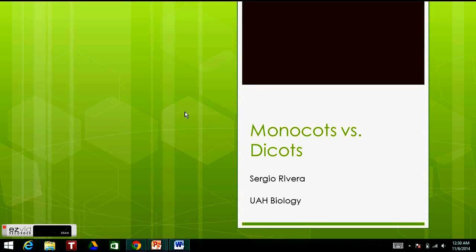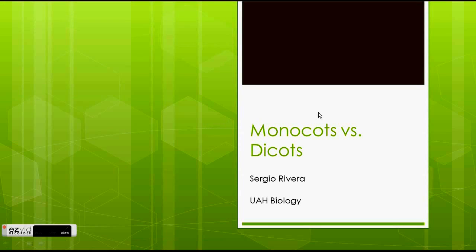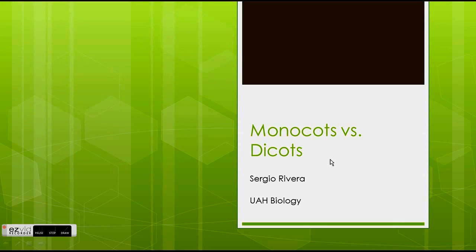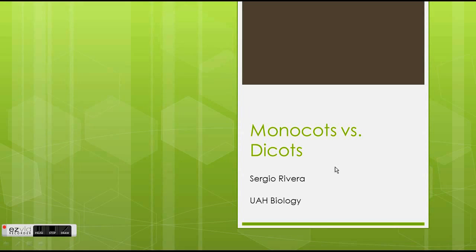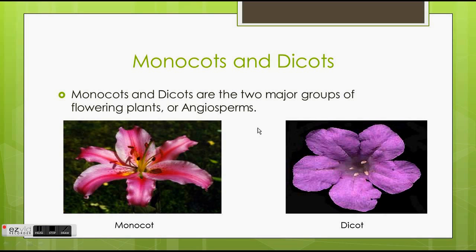My name is Sergio Rivera and today we will be talking about the differences in monocot and dicot plants. Monocots and dicots are the two major groups of flowering plants, also known as the angiosperms.